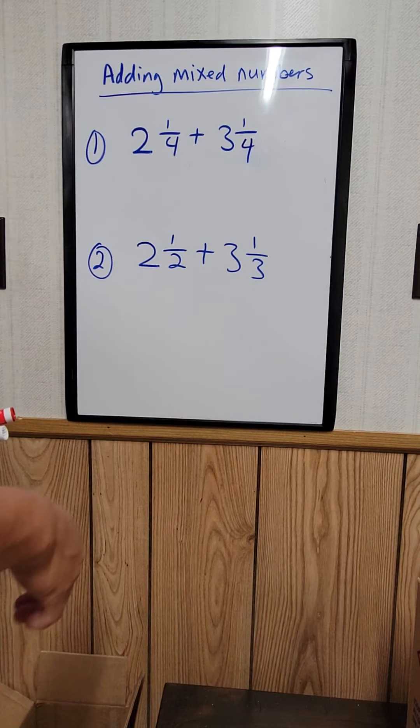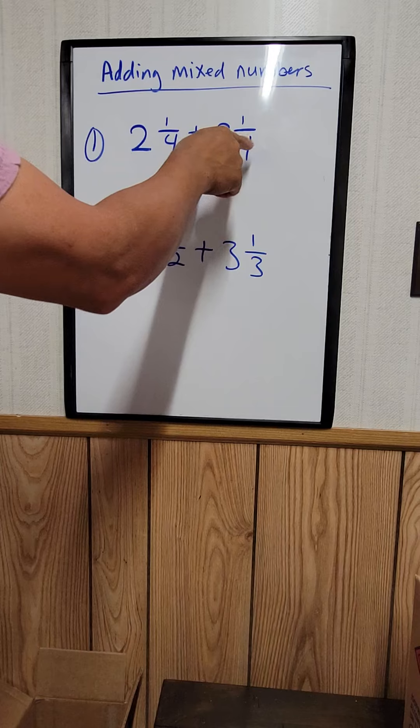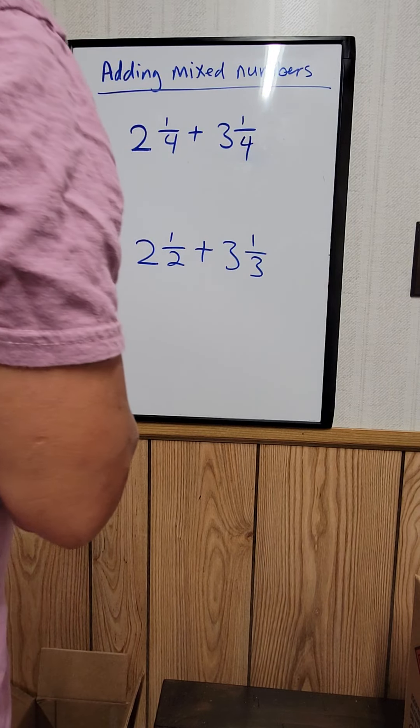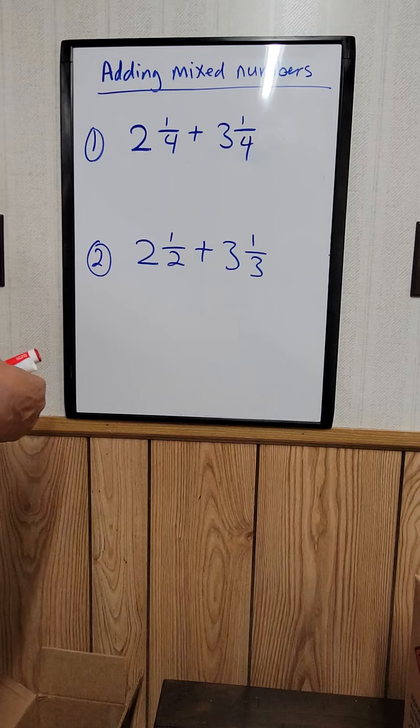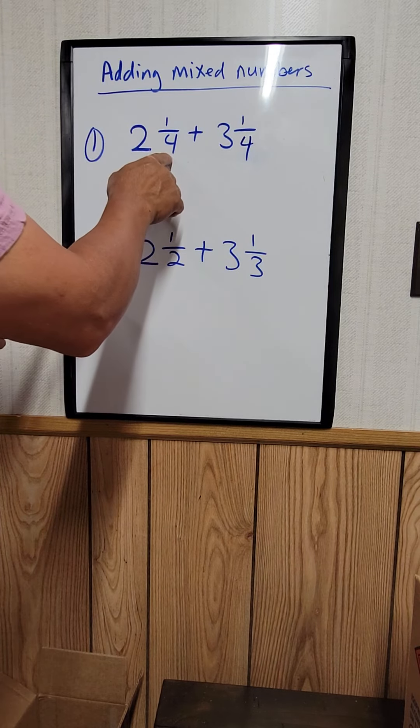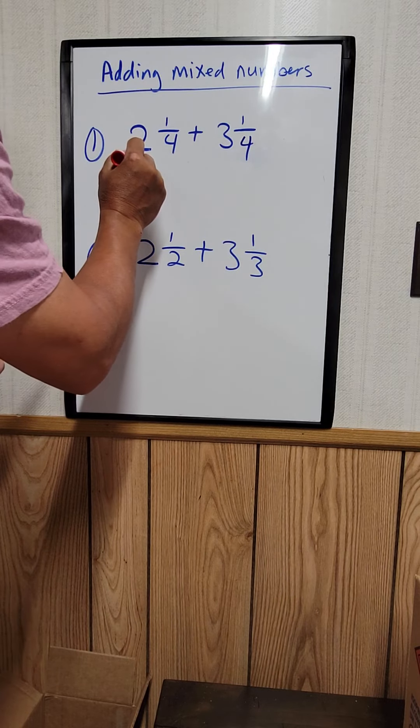How to add mixed numbers. Example number one: 2 1/4 plus 3 1/4 equals what? This mixed number right here, look at the fraction part. The fraction parts are the same because 1/4 is equal to 1/4.